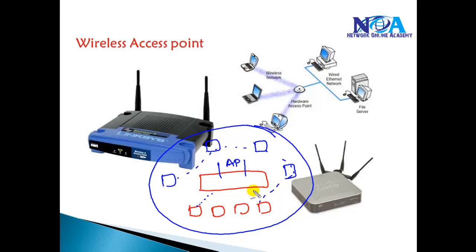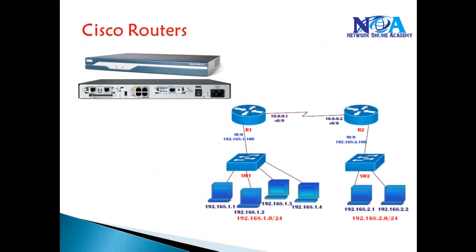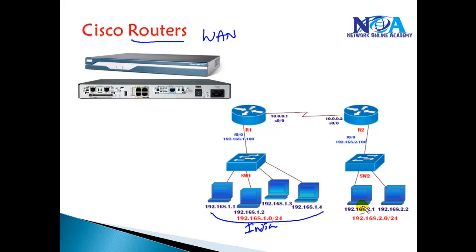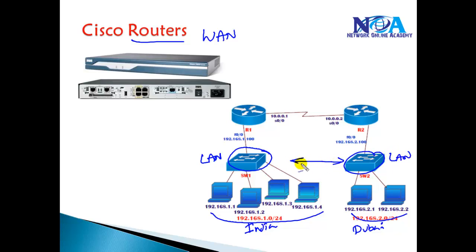In these wireless scenarios we use access points, and this gives us two types of networks: wired LAN and wireless LAN. The next important device is the router. A router is a device used to provide a WAN connection. For example, if you have a branch office in Hyderabad, India, and another branch office in Dubai, and you want these two branches to communicate, you need to connect two separate LANs together.